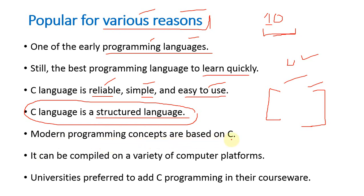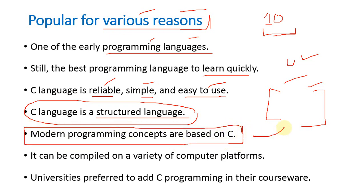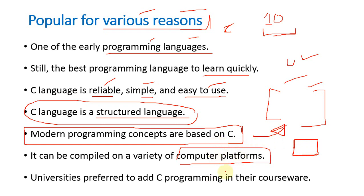Modern programming concepts are based on C. Whether you say PHP, C sharp, or visual programming — any language in today's or the future IT market — all programming languages are based on C language. C can be compiled on a variety of computer platforms. A program written and executed on one computer can be easily compiled on Windows, Unix, Windows 7, or Mac. This is called portability — C programs are portable programs and you need not change any code.